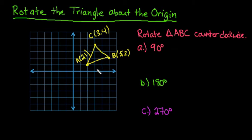Hi, for this video what I want to do is show you how to rotate a triangle about the origin in the coordinate plane. So what we have here is triangle ABC. Coordinate A is at (2, 1), B is at (5, 2), and C is at (3, 4).